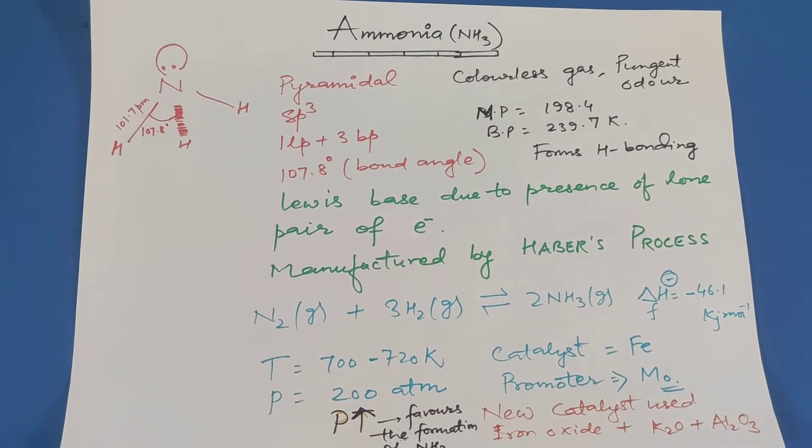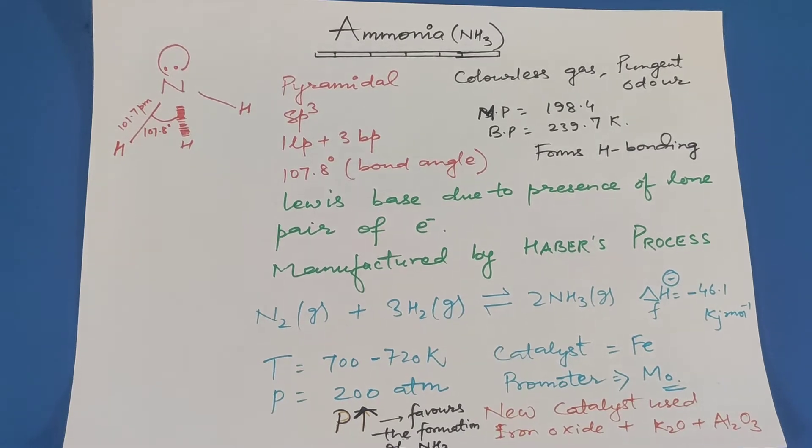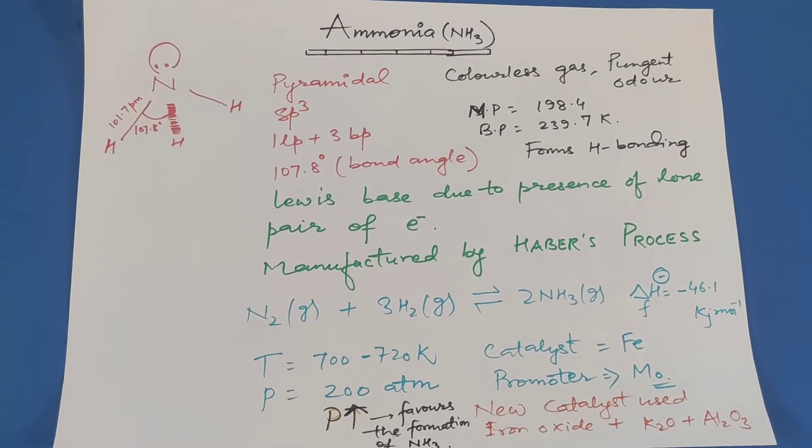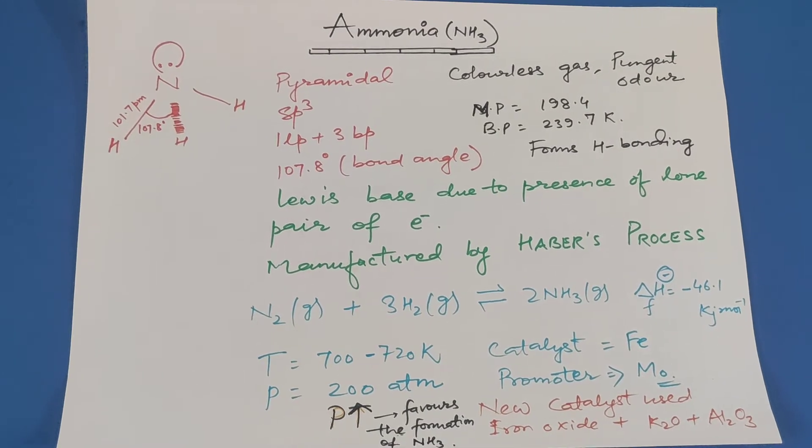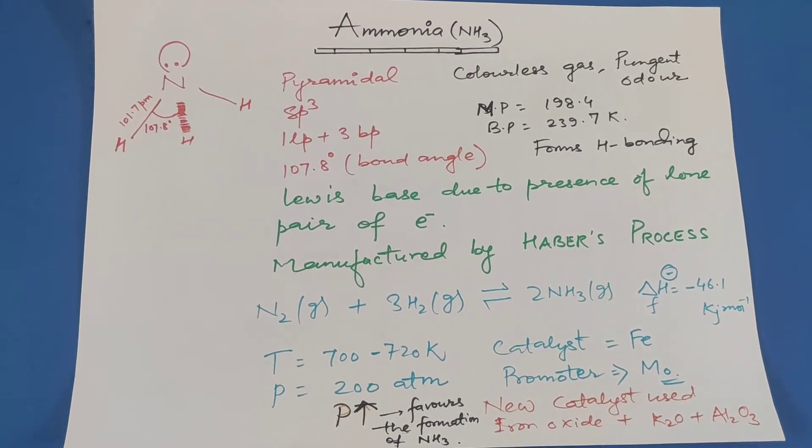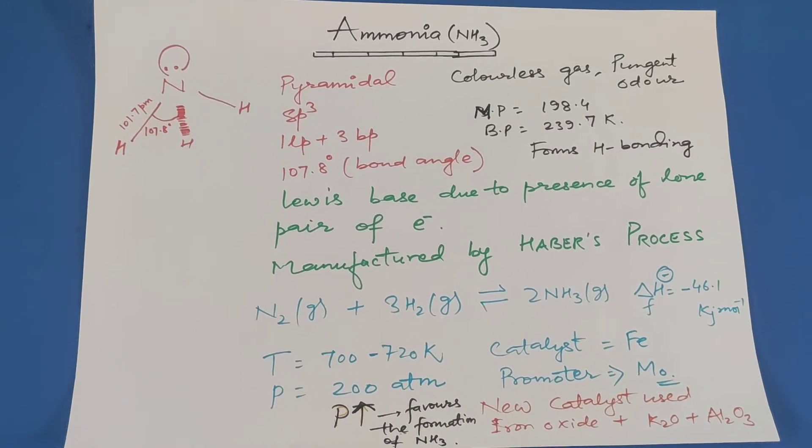It is sp3 hybridized. It has one lone pair and three bond pairs. The bond angle, that is HNH bond angle, is 107.8 degrees. It is a Lewis base due to presence of lone pair of electrons.